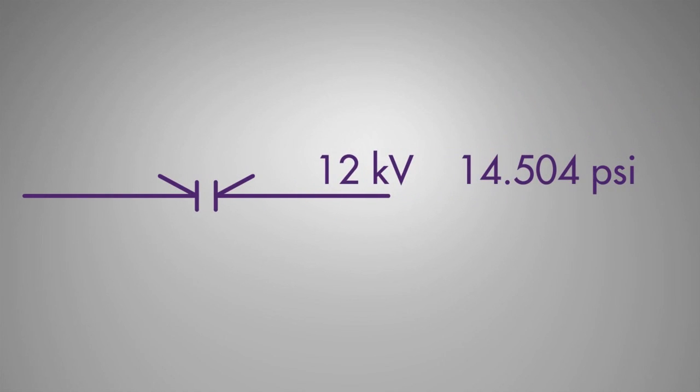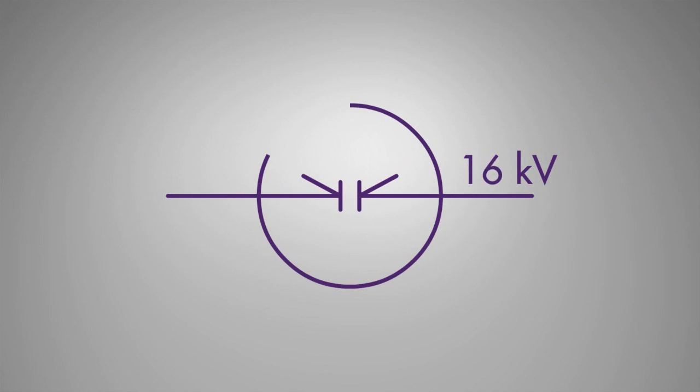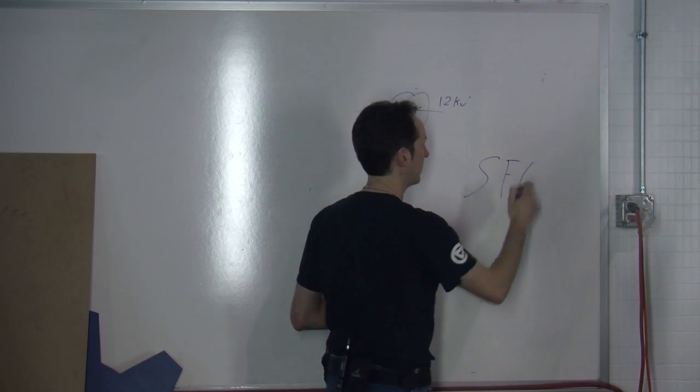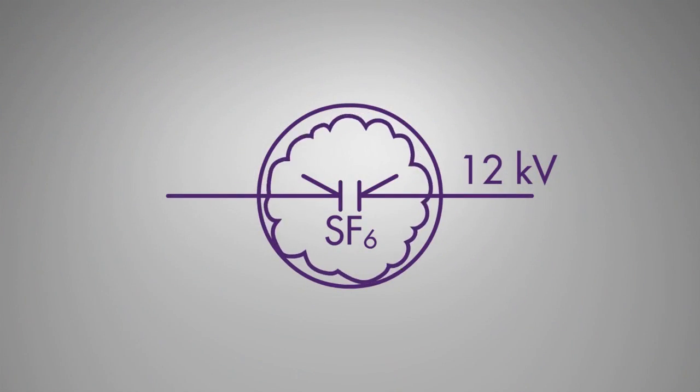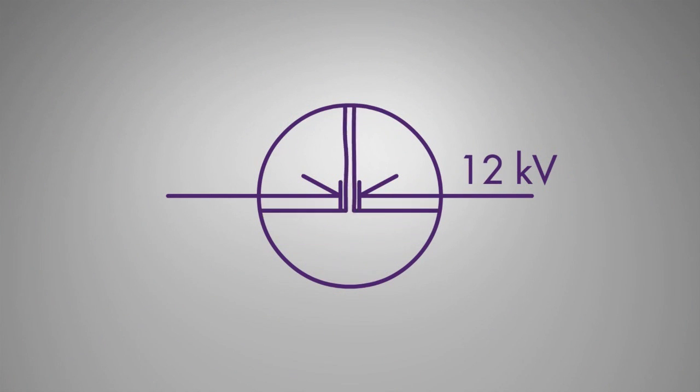Now, if the air pressure goes up, the voltage required to jump that goes up. If the humidity goes up, the voltage required goes down. If the temperature changes it. If you put it inside a bubble and fill it with sulfur hexafluoride, the voltage goes crazy up. If you fill it with oil, then it's like a hundred thousand volts. It's nuts.